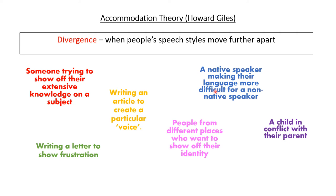What you might have started to notice about quite a few of these divergence examples is that those using them are purposely not adhering to any politeness principles, using divergence to cause more division between themselves and those they are speaking to. This is why we see divergence less than convergence — it's not easy to accommodate someone's way of speaking if your style is purposely different to theirs.